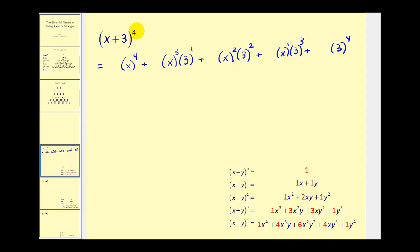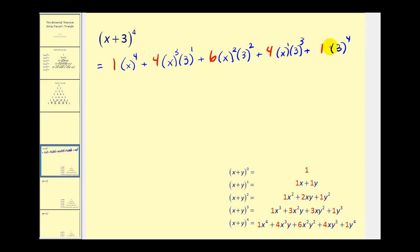Now we go to Pascal's Triangle, row four, to write in the coefficients of each of these products. Row four gives us one, four, six, four, one. Let's go ahead and write those in: one, four, six, four, and one.